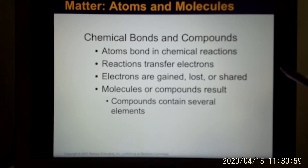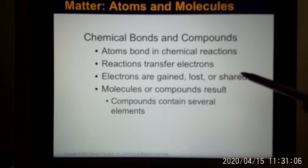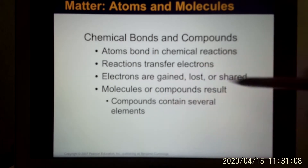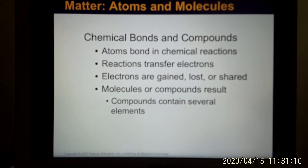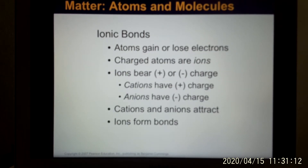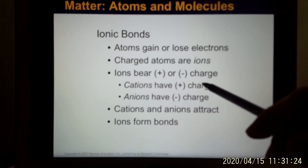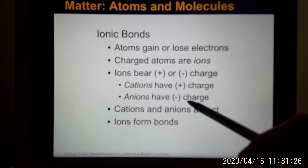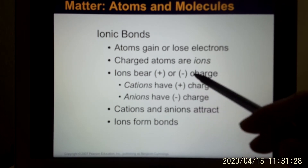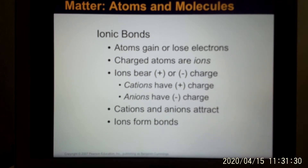Chemical bonds are the chemical reactions between one atom and another — they either gain, lose, or share electrons, and they form the chemical bond. The first bond is called the ionic bond. Ionic bonds create ions. If an ion has a positive charge, we call it a cation; if it has a negative charge, we call it an anion. They attract each other and form the ionic bond.